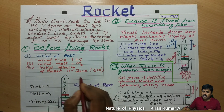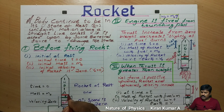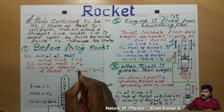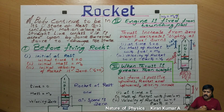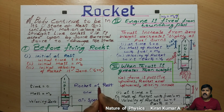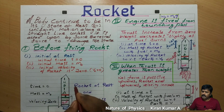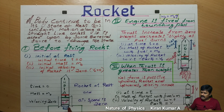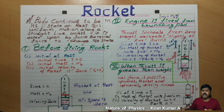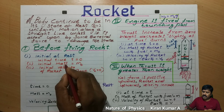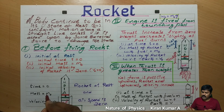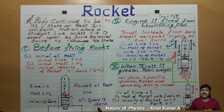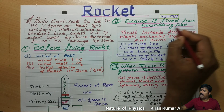Before firing the rocket, initially the rocket is at rest. Initial time t = 0, initial mass = m₀, and initial velocity of the rocket is also zero. The rocket is on the launching pad — represented in green color. Air resistance is also zero. Total mass initial is m₀ and initial velocity equals zero.